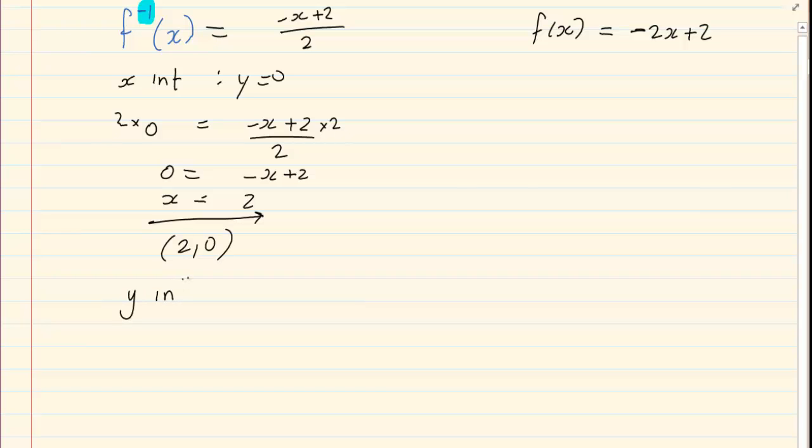Now we are going to do y-intercept. x is equal to 0. So I am going to have y = (-0 + 2)/2 which is equal to 1. My coordinate is going to be (0,1). Now let us draw this.